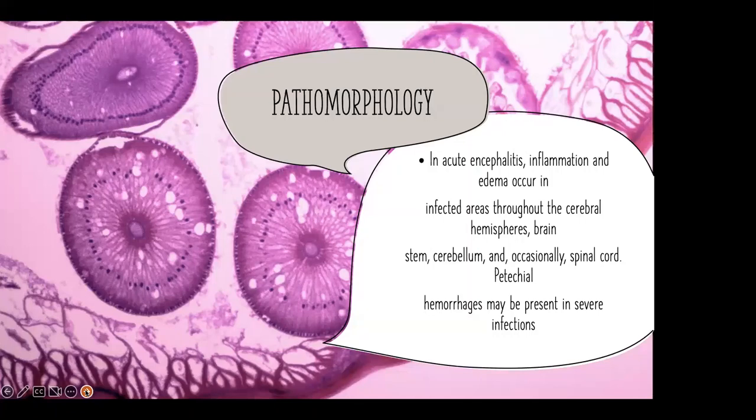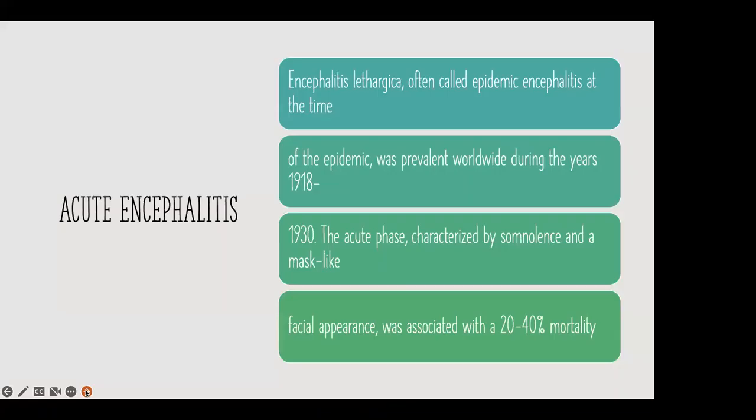Hemorrhage may be present in severe acute encephalitis infections. Encephalitis lethargica, often called epidemic encephalitis, was prevalent worldwide during 1918 to 1930. The acute phase was characterized by somnolence and a mask-like facial appearance.